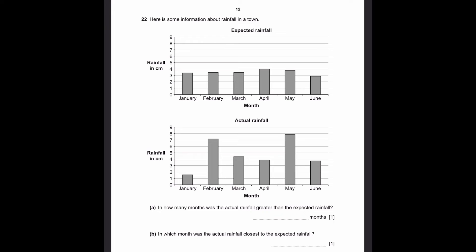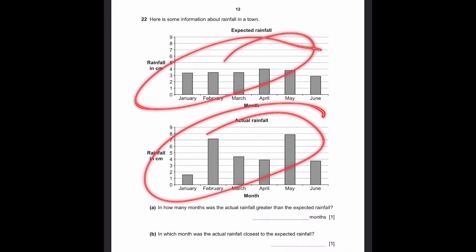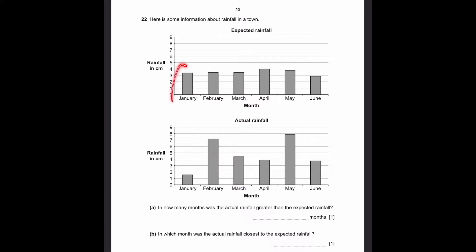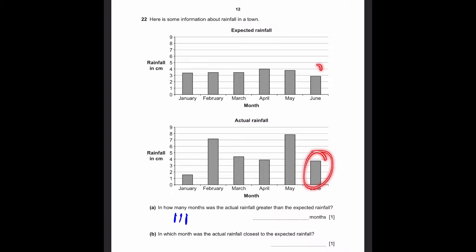Question 22. Here's some information about rainfall in the town. Part A: In how many months was the actual rainfall greater than the expected rainfall? Expected and actual rainfall are given in two separate bar graphs. For January, expected is higher — does not count. February, actual is greater — that's one. March, actual is slightly greater — that's two. April, expected is a tiny bit higher — does not count. May, actual is clearly higher — that's three. June, actual is also just a bit higher — that's four. So the answer is four months.